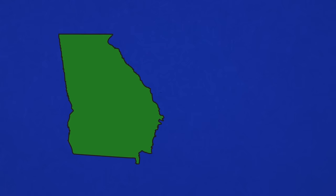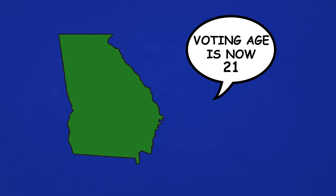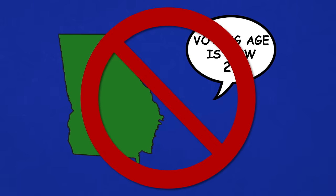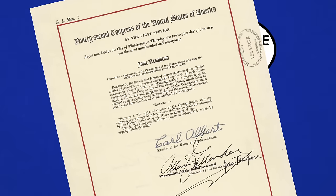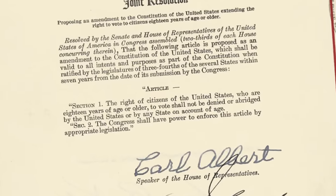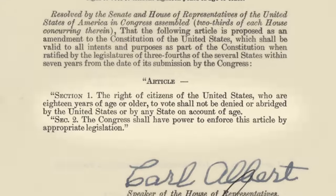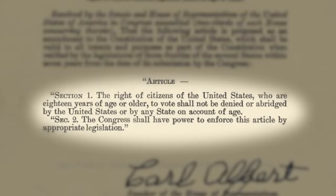This means that national laws take priority over any conflicting state laws. For example, if Georgia wanted to pass a law making the voting age 21 years and older, this would be unconstitutional because it violates the 26th Amendment, which states that all citizens in the United States who are 18 years or older cannot be denied the right to vote based on their age.